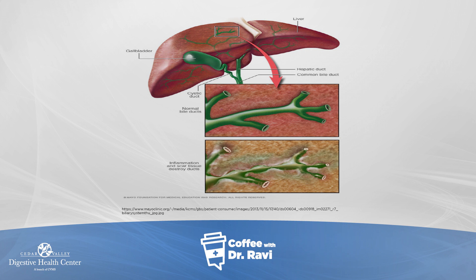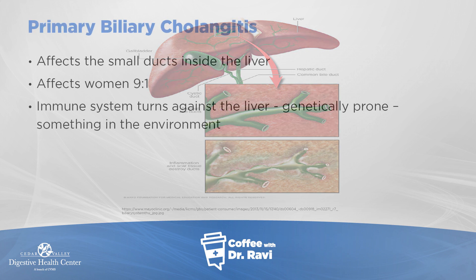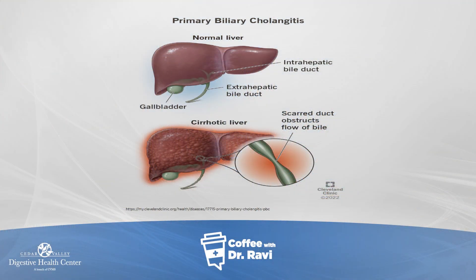Primary biliary cholangitis is a condition that predominantly affects women by a ratio of nine to one. What's happening is that the immune system — which normally resides in the blood and bone marrow — turns against the liver because of a combination of genetic susceptibility and an outside trigger: something in the air, food, environment, or an infection. This combination causes the immune system to start irritating the small bile ducts in the liver, which form a fine network of drainage pipes that become bigger and bigger as they come out.